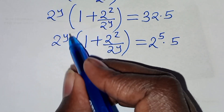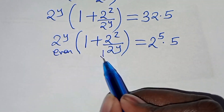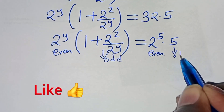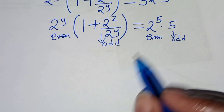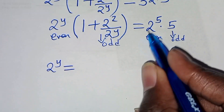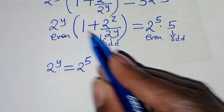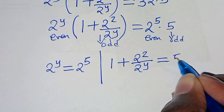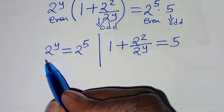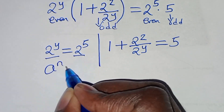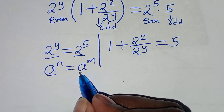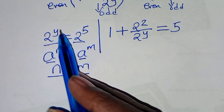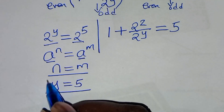So we have 2 to the power of y times (1 plus 2 to the power of z over 2 to the power of y) equals 160, expressed as 2^5 times 5. Comparing the even and odd parts: 2 to the power of y equals 2 to the power of 5, and 1 plus 2 to the power of z minus y equals 5. Since the bases are common, y equals 5.